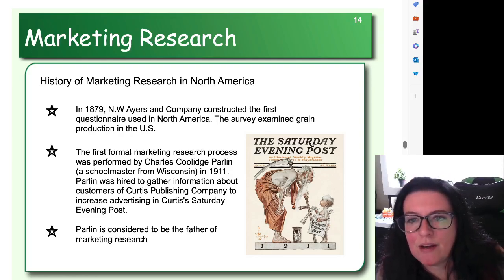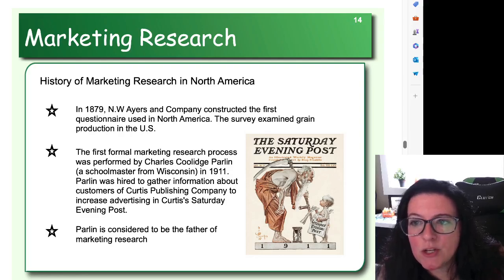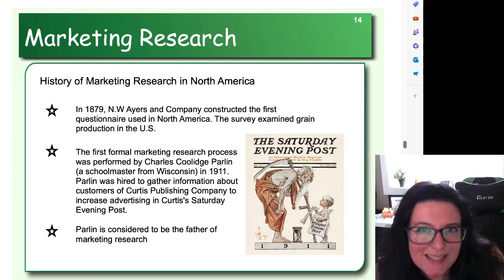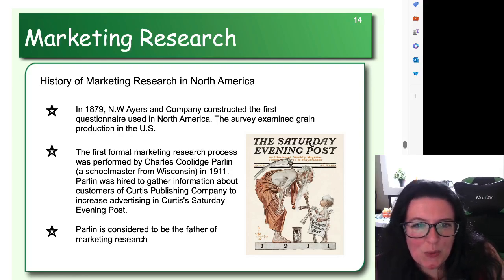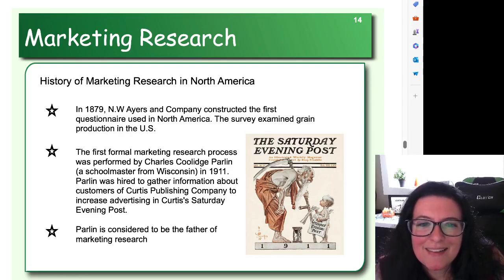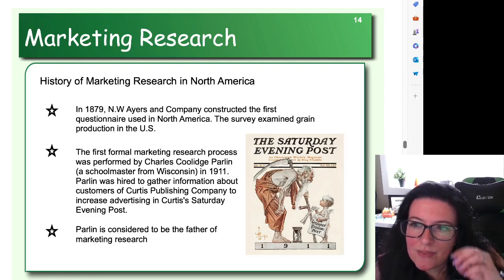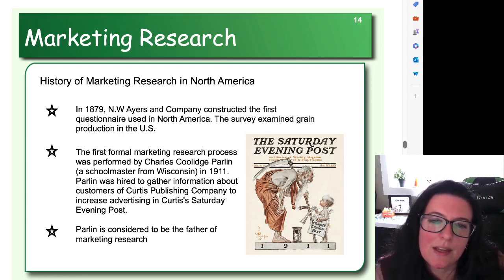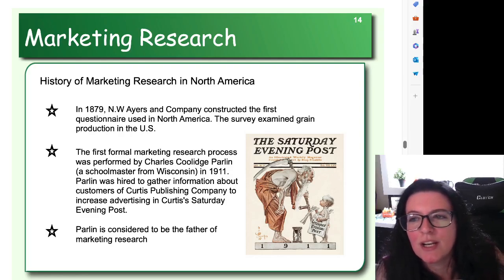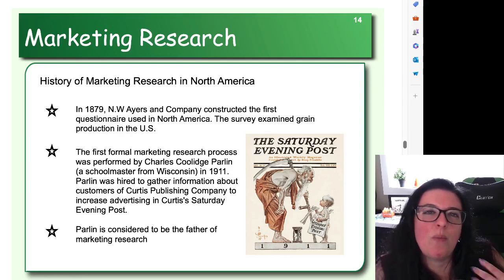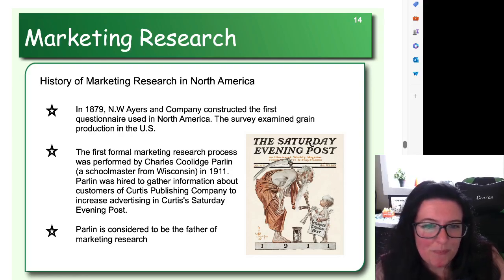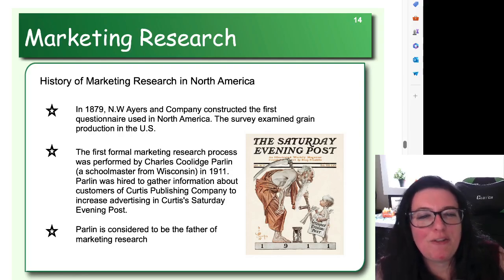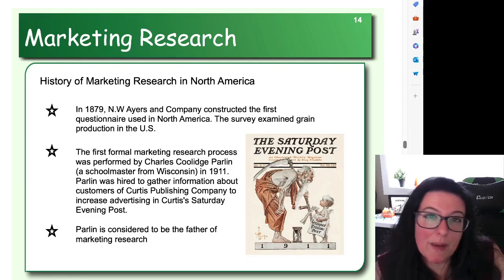The formal collection of data to inform the operations of an organization has really only been around since about 1879. In 1879, NW Ayers and Company constructed the first survey used in North America. This first questionnaire related to business examined grain production in the U.S. The agency wired state officials and publishers throughout the country requesting information on expected grain production, to create forecasts as to how much grain was predicted to be available.